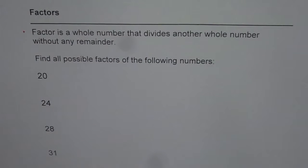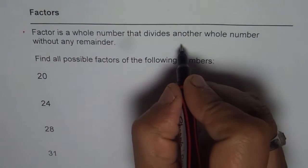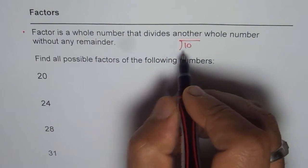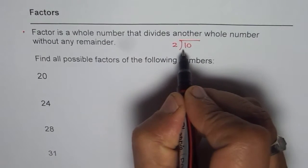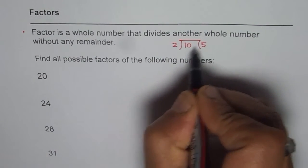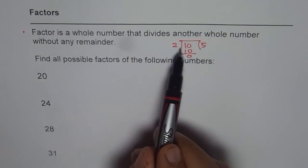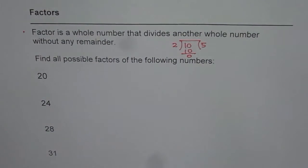It says factor is a whole number that divides another whole number without any remainder. That is what a factor is. If I divide 10 by a whole number, let's say 2, it goes 5 times. 2 times 5 is 10, the remainder is 0. In that case, 2 is a factor of 10.